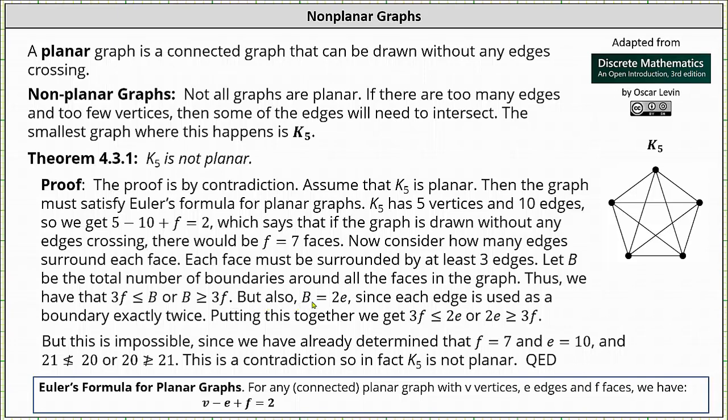We also know that b is equal to 2 times e the number of edges since each edge is used as a boundary exactly twice. Putting these together by performing substitution, we can form the inequalities 3f is less than or equal to 2e or 2e is greater than or equal to 3f.